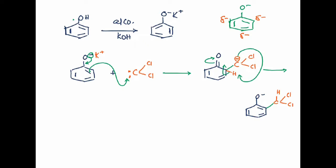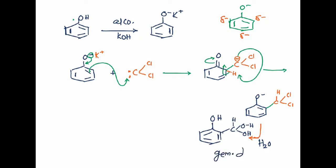The geminal diol is unstable because two OH groups on the same carbon cannot coexist. Therefore elimination of water occurs in this step, H2O is released, and a carbonyl group is formed.